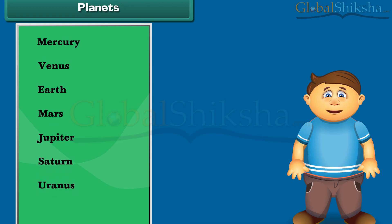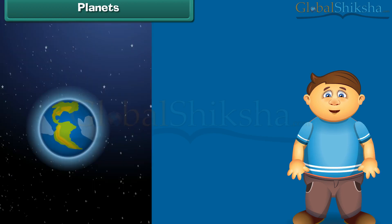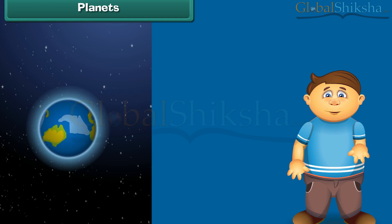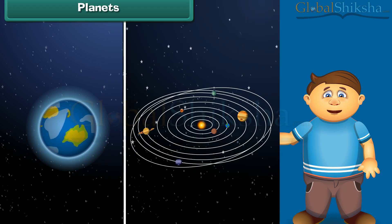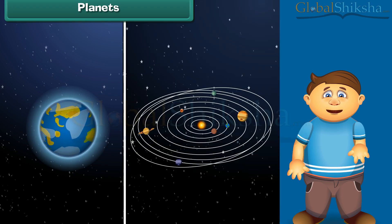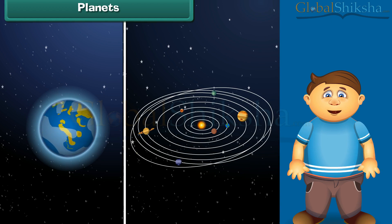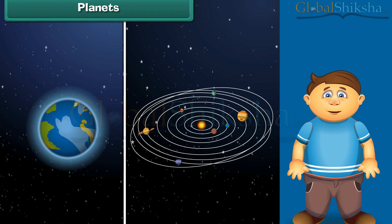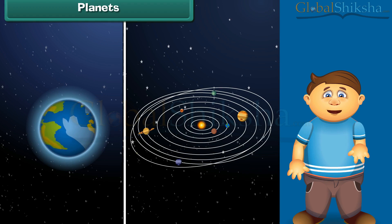Do you know the fact that life is possible on planet Earth only, because of the presence of water and oxygen? On other planets, there is no clue of the presence of oxygen and water. Apart from this, the extreme temperature is also not suitable for the existence of life on other planets.